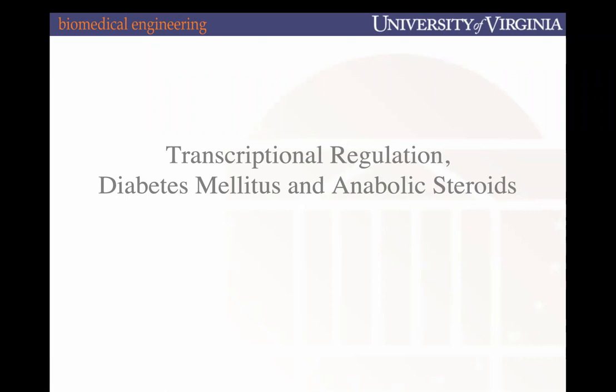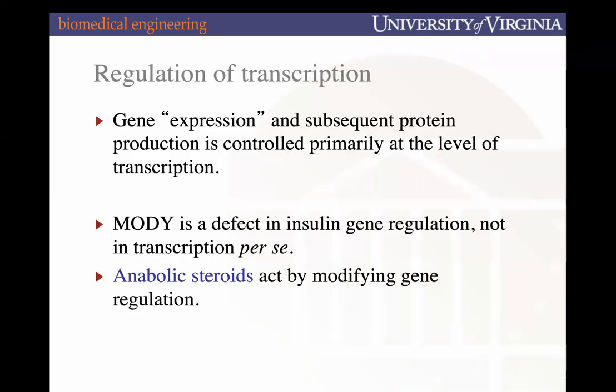Last class, we left off describing from beginning to end how transcription occurs. We'll be finishing with its application with respect to diabetes, and also talk about anabolic steroids today. Transcription is the process of producing the mRNA transcript that relates to a specific gene. When we talk about gene expression, that's typically referencing the regulation of transcription — whether gene expression is increasing or decreasing the mRNA transcripts or subsequent expression of that gene.